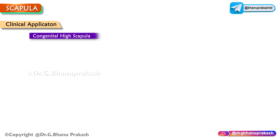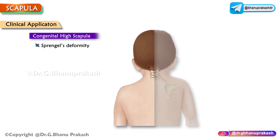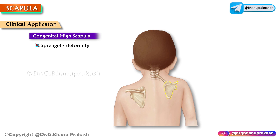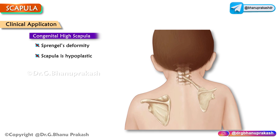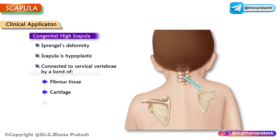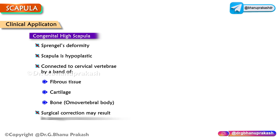Clinical application — Congenital High Scapula, also known as Sprengel's deformity of the scapula. Normally, the scapula first develops in the neck during intrauterine life and then descends into the back of the chest. Sometimes this descent doesn't occur, and the scapula remains in the neck region. The scapula is usually hypoplastic and might be connected to the cervical portion of the vertebral column by a band of fibrous tissue, cartilage, or bone. Any attempt at surgical correction may result in damage to the brachial plexus.